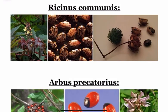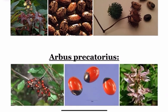First, we have Ricinus communis, also called as Rendi or Castor. The active principle is Ricin. The intact seed is not toxic but the crushed seed will be toxic. It inhibits protein synthesis.